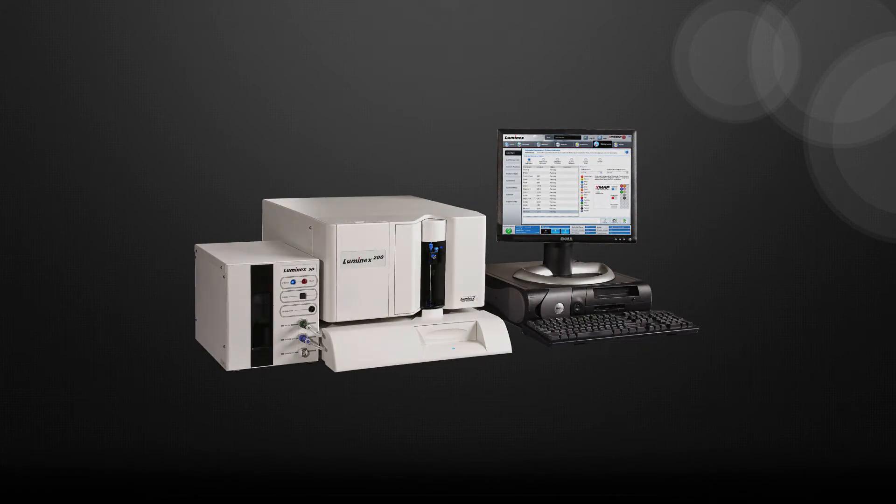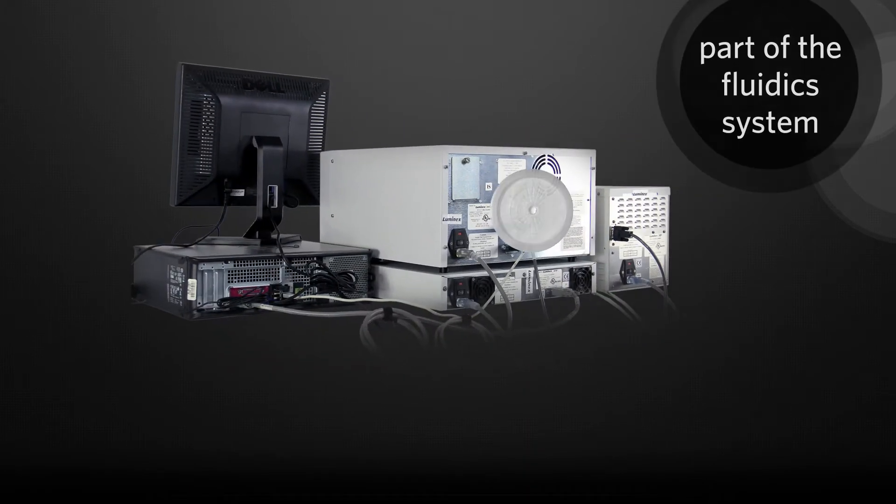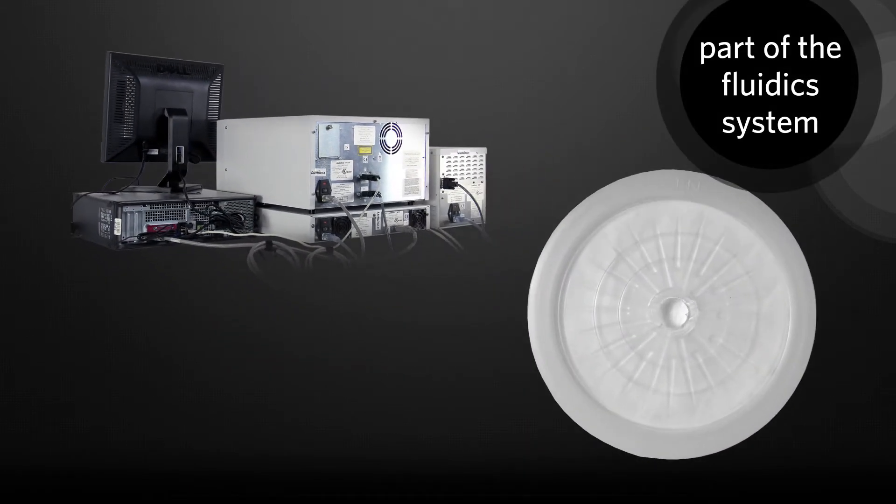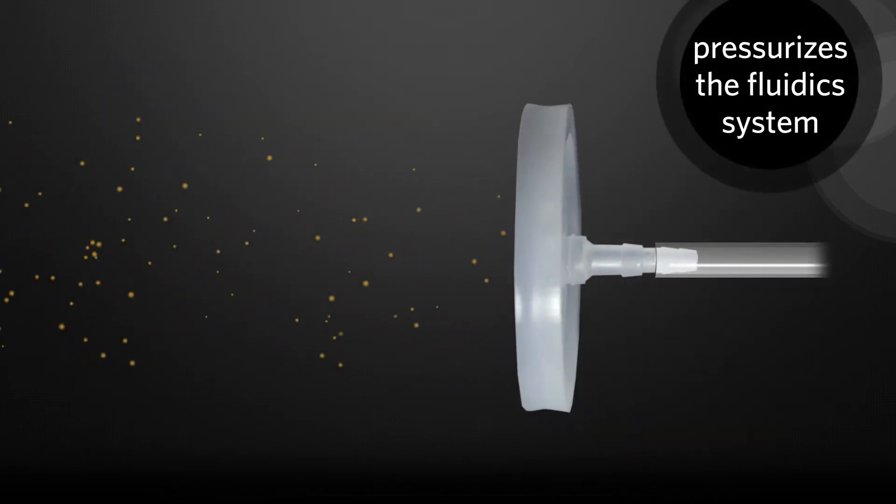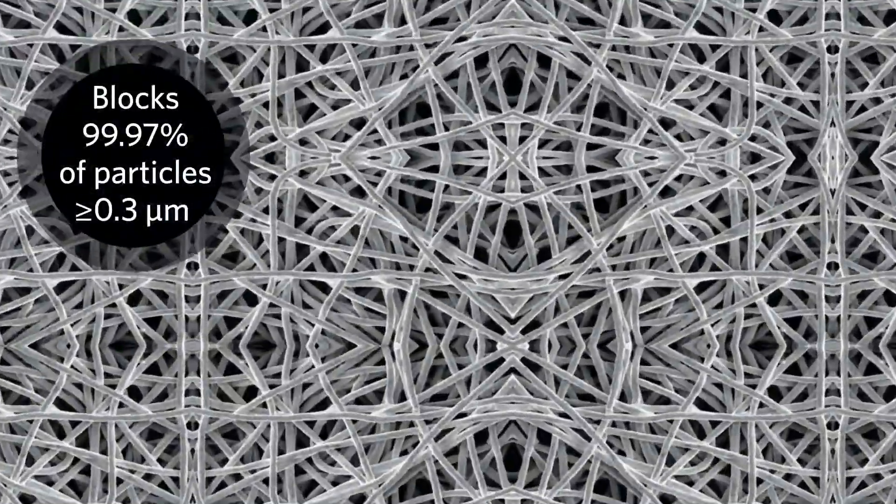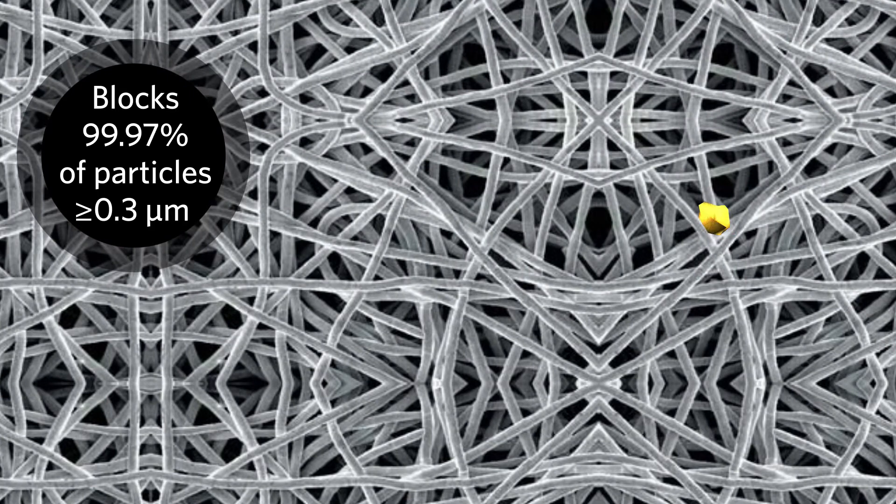Why should I replace the air intake filter? The analyzer air intake filter is part of the Fluidix system on the Luminex 200. Air is pulled into the system through the filter to pressurize the Fluidix system. It blocks 99.97% of all particles 0.3 micrometers or larger in size.